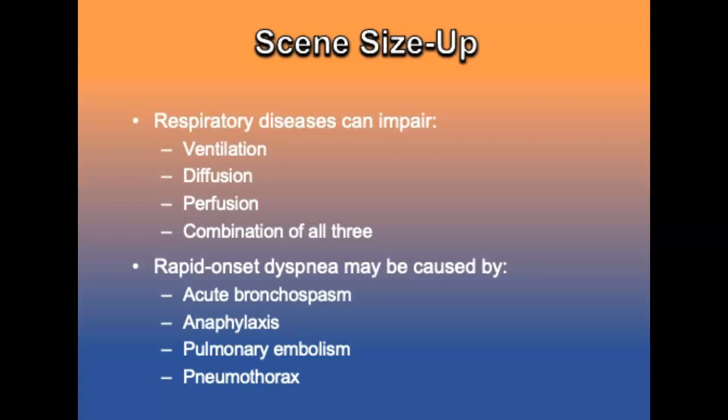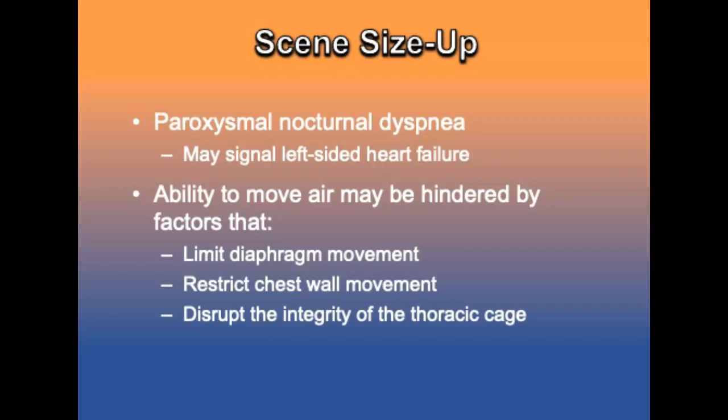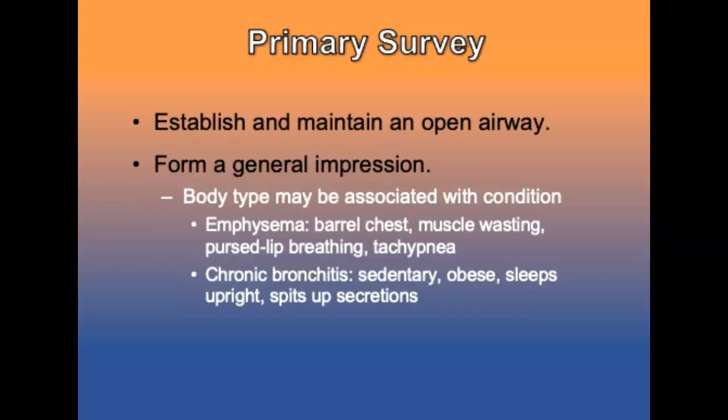The most common complaint of patients with respiratory disease is dyspnea. The most common cause is hypercarbia — too much carbon dioxide in the blood. Rapid-onset dyspnea may be caused by acute bronchospasm, anaphylaxis, pulmonary emboli, or pneumothorax. Paroxysmal nocturnal dyspnea presents suddenly in the middle of the night and may signal left-sided heart failure. Patients' ability to move air may be hindered by factors that limit diaphragm movement, restrict chest wall movement, or disrupt the integrity of the thoracic cage.